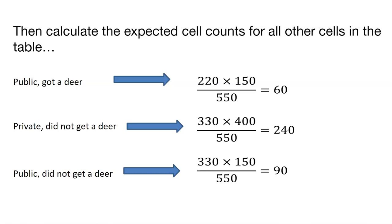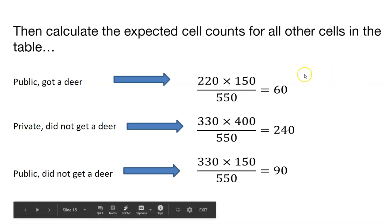Now we can calculate that for the other three options. Whether or not you hunted on public lands and got a deer, hunted on private lands and did not get a deer, hunted on public lands and did not get a deer. We can find all those expected values here just by looking up on the table.